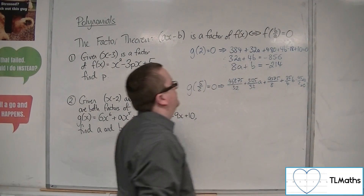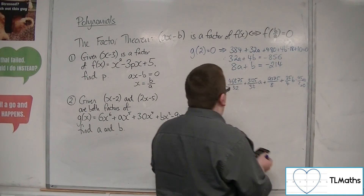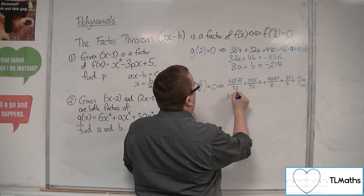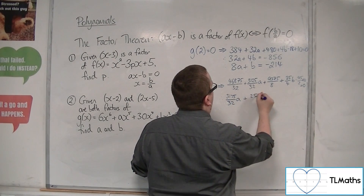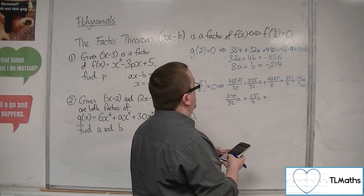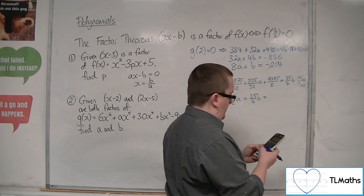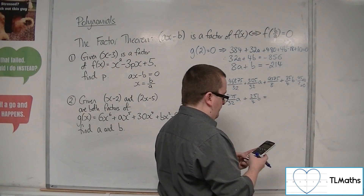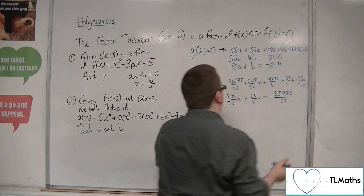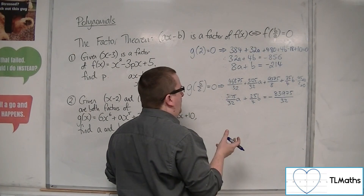That looks absolutely ghastly, so let's tidy it up. We have 3125a over 32 plus 25b over 4 on the left, and moving everything else to the right: 46875 over 32 plus 9375 over 8, take away 45 halves plus 10, giving minus 83975 over 32 on the right-hand side.